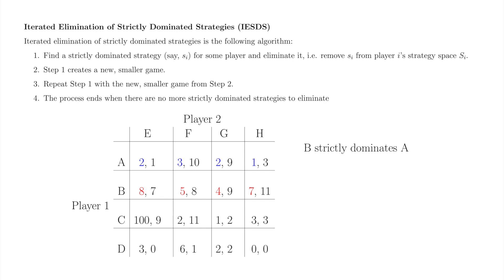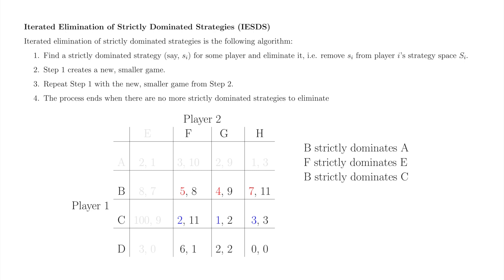B strictly dominates A — eliminate A. F strictly dominates E — eliminate E. Note that we could have first used F to eliminate E, and then used B to eliminate A. Either order is fine. B strictly dominates C — eliminate C. G strictly dominates F — eliminate F. Note that we used F to eliminate E earlier, but that does not mean that F itself will survive iterated elimination.